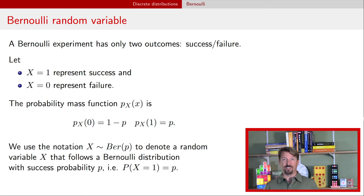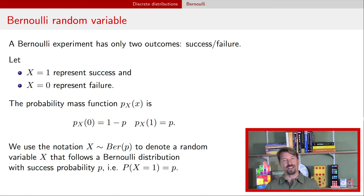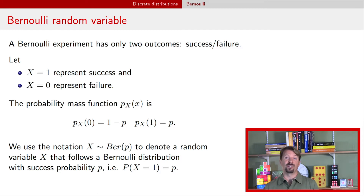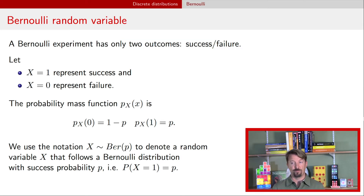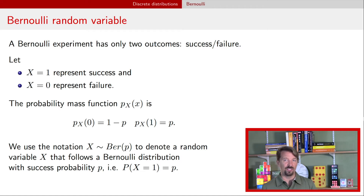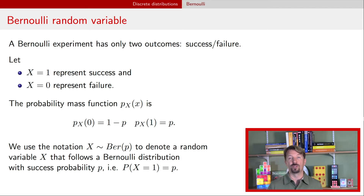Now it's time to introduce notation for random variables. We use capital Roman letters at the end of the alphabet — x, y, z — to represent random variables. Capital X followed by a tilde says it's a random variable, and then on the right side it tells you what distribution it follows. In this case, it's a Bernoulli random variable with a probability of success p, written as Ber(p). So that just tells you the probability that X equals 1 is p. This tilde notation is common for all random variables, and the quantity on the right-hand side changes depending on what random variable we're talking about.